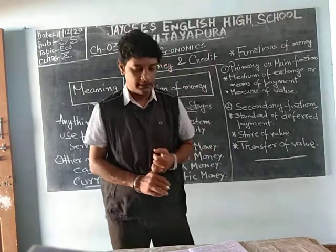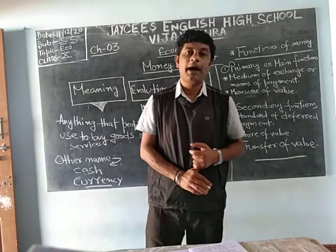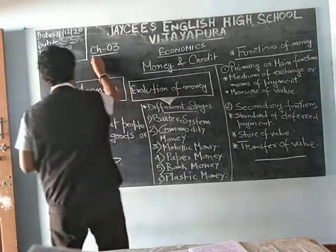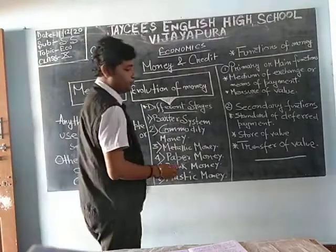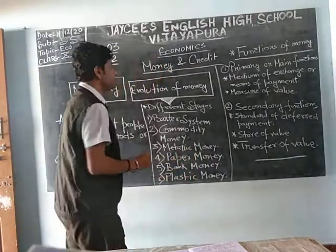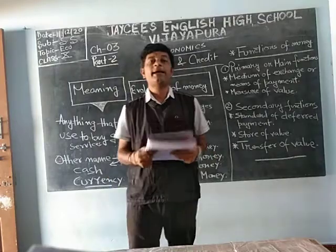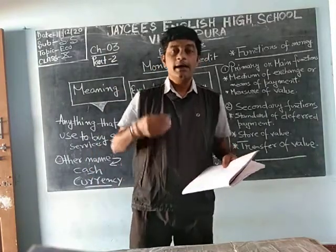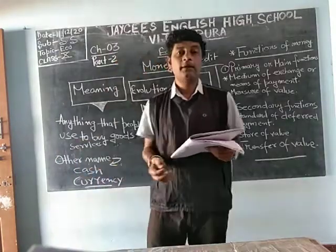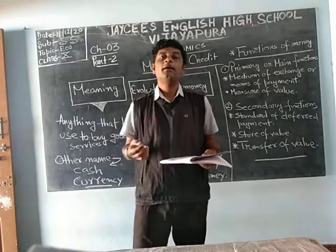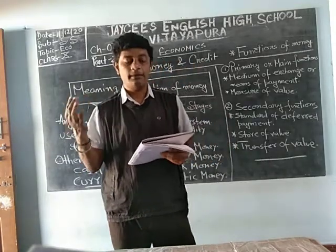In this class we will go with the Economics part — Economics chapter three. In your part two, this is the third chapter, and the chapter name is 'Money and Credit.' Money is basically the cash or currency we have, but here we will learn what exactly money is and what the deeper sense of that money is.